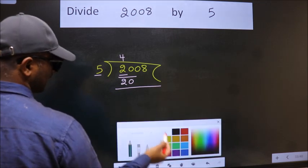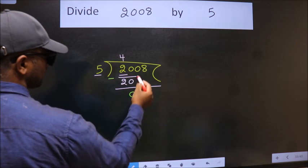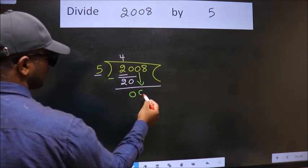Now we subtract and get zero. After this, bring down the beside number, so zero down.